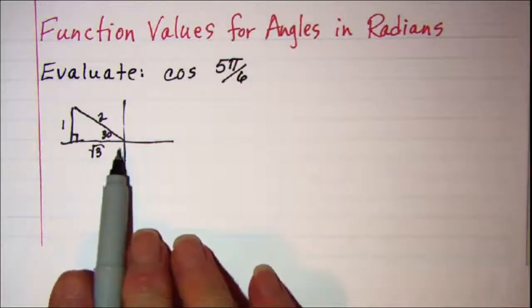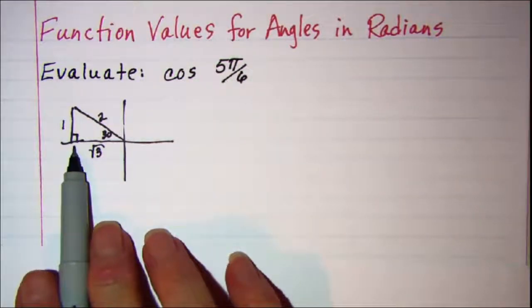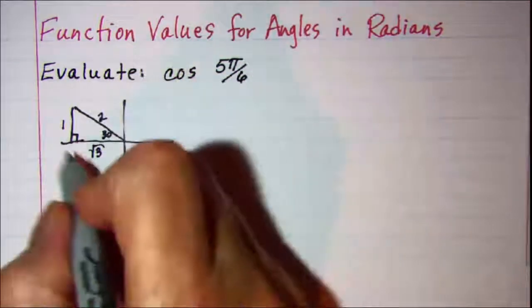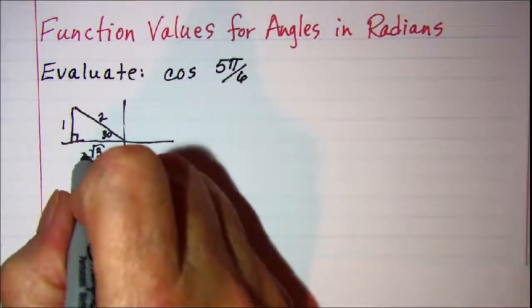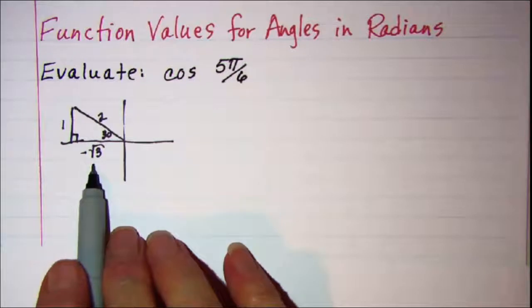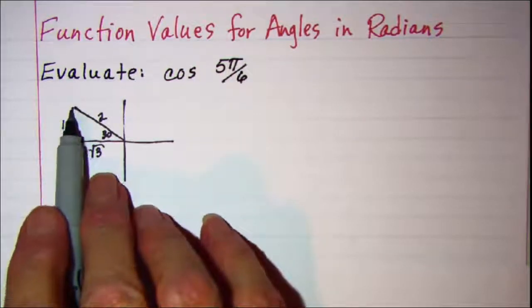Now I also know that since this measurement is to the left of the y axis then I would put a negative sign on this measurement. This one is up so it's positive.